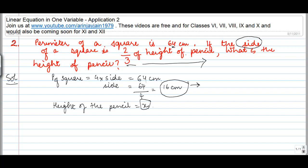We know that two-third of the height of the pencil, or 2 upon 3 into x, is equal to the side of the square, which we have found out in this equation is equal to 16 cm.